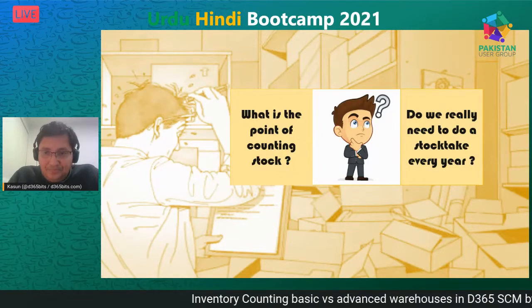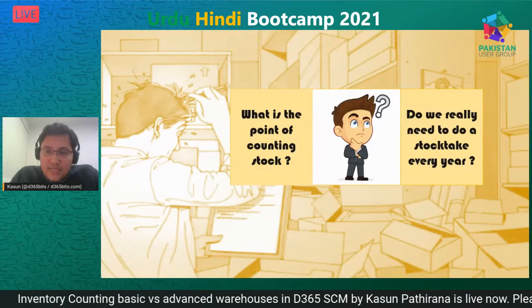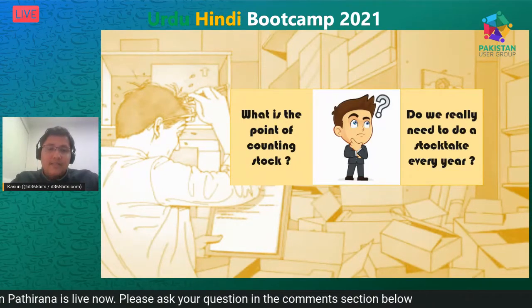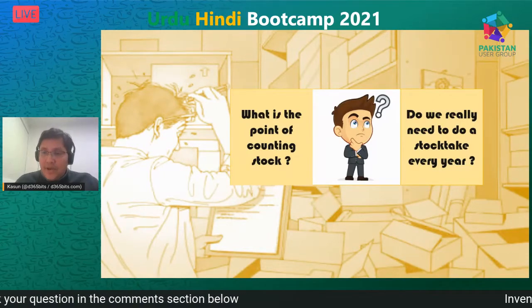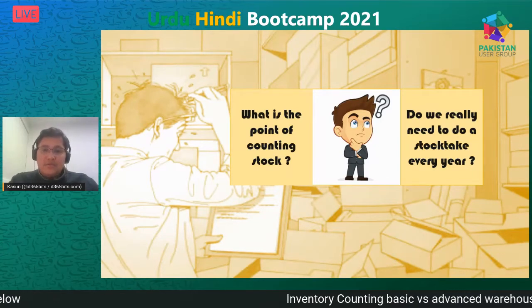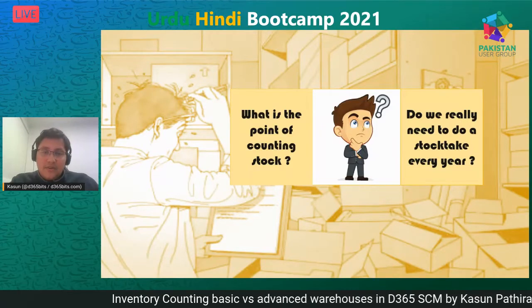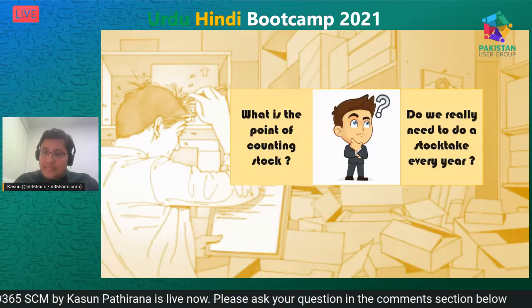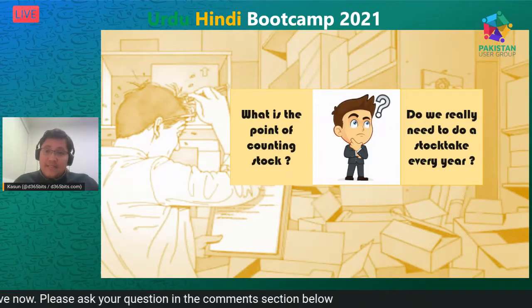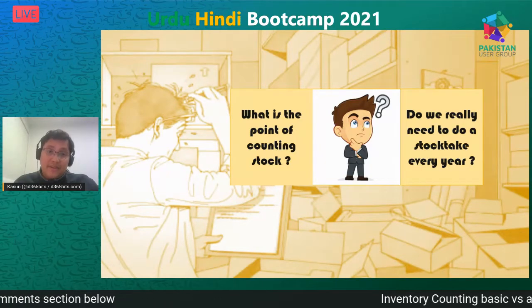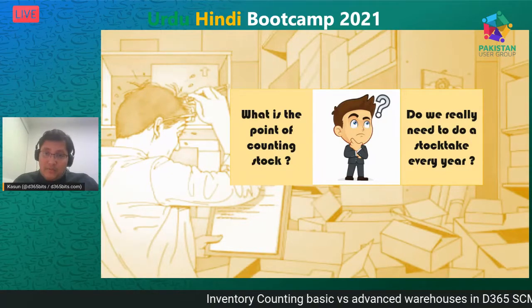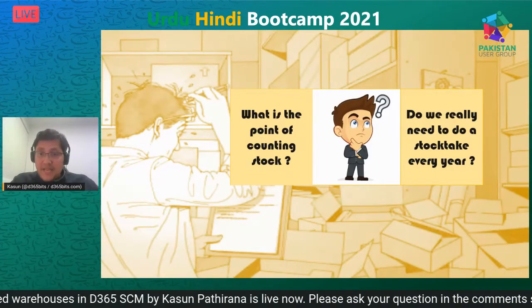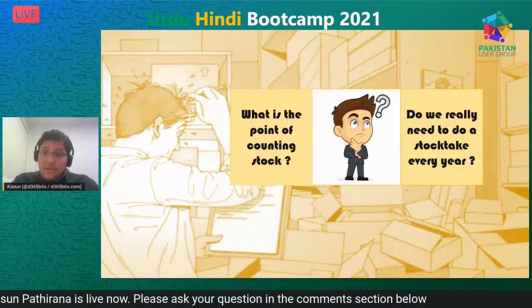What is the point of counting stock? A stock take is a mechanism to make sure that the stock on hand recorded in your system is accurate. When new stock arrives at your docks, you need to check at the point of receipt to make sure you've received everything ordered. This process increases stock on hand and records your purchases. When a sale is made, stock is reduced from your inventory.